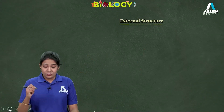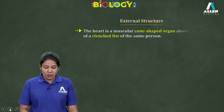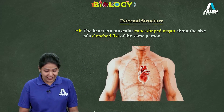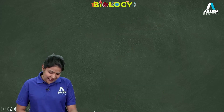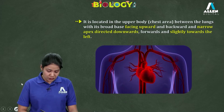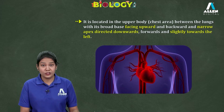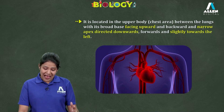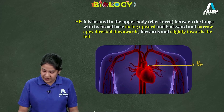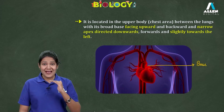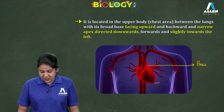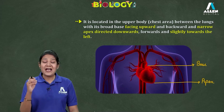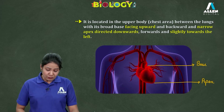Now let's talk about the external structure of the heart. Our heart is a muscular, cone-shaped organ which is about the size of a clenched fist. It is located in the upper body or chest area between the lungs, with its broad base facing upward and backward, and the narrow apex directed downward, forward, and slightly towards the left.